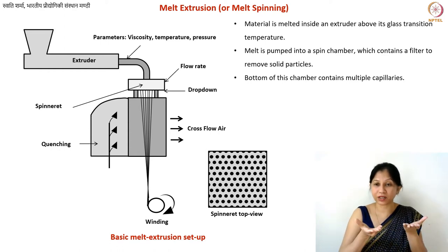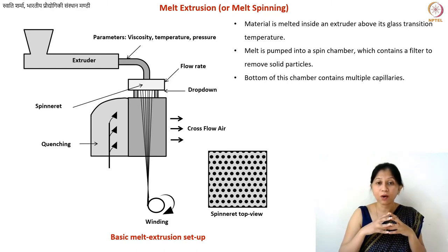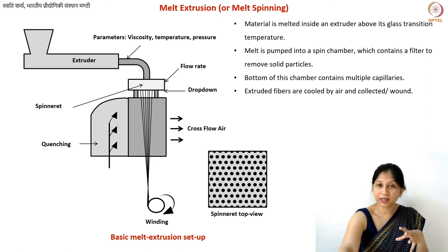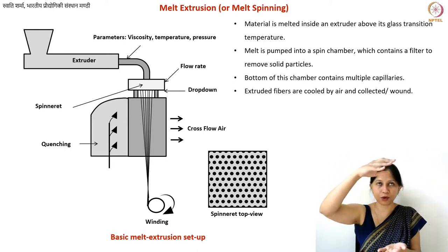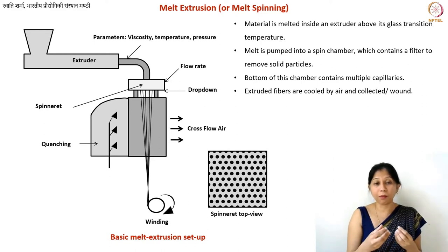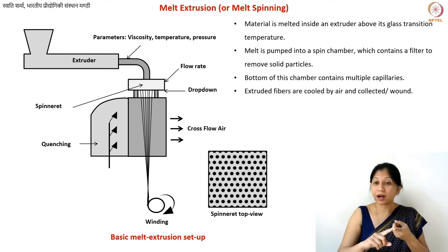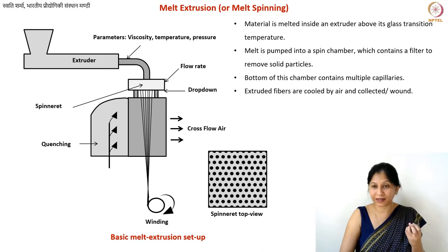After filtration, you have the spinneret — a plate with a large number of holes that are basically capillaries, through which your polymer passes. You will collect the fiber at the bottom. This distance is also where you cool down your fibers. You can do quenching — just cool it down in a cooling chamber. When you cool the polymer below its glass transition temperature, it becomes hard, which is what you want so the fibers don't change shape.